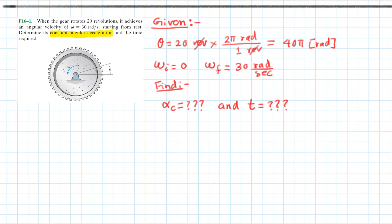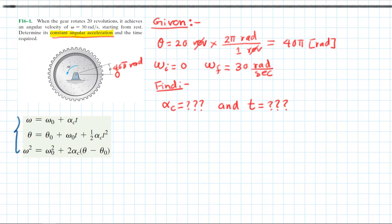We want to know how long it took the gear to rotate 40π radians. Since we are dealing with constant angular acceleration, we use the constant angular acceleration equations of motion. The first equation has two unknowns — constant angular acceleration and time — so it will not work.